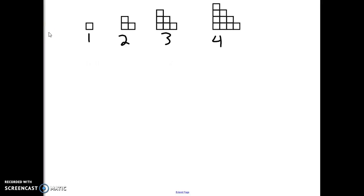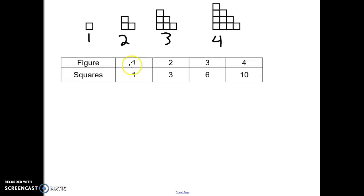I want to take a minute to show an algebraic way to find a pattern for this figure sequence occurring above. First, I need to create a table. In this case I have four figures. In my first figure I have one square, in my second figure I have three squares, the third figure I have six squares, and the fourth figure I have ten squares.